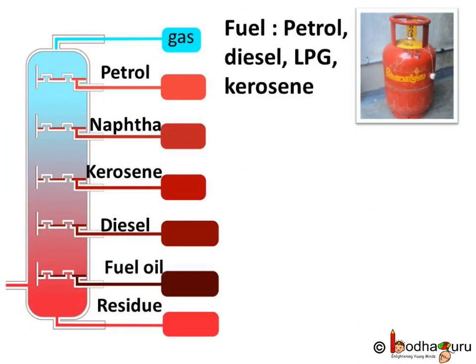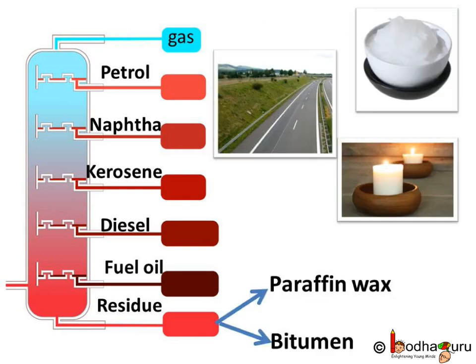We get lots of things from petroleum. We get fuels like petrol, kerosene, diesel, LPG, etc. We get lubricating oil. Paraffin wax, which we get from the residue of the refining process, is used for making ointments, candles, petroleum jelly, face cream, wax, etc. Bitumen, which is also obtained from the residue of the fractional distillation process, is used for making paint and building roads. Every component of petroleum has some use. Hence, it is often called black gold.